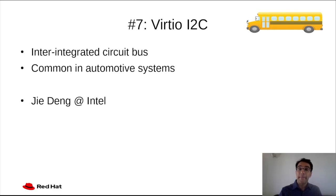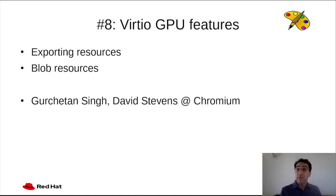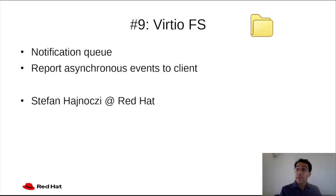Over the last year, the Virtio GPU gained the ability to export resources between devices as well as the ability to pass global resources. This has been developed by Kurchaton Sync and David Stevens while working at Chromium. The Virtio file system gained support for the notification queue, which allows reporting asynchronous events from the server to the client. This work has been done by Stefan Hainochi at Red Hat.